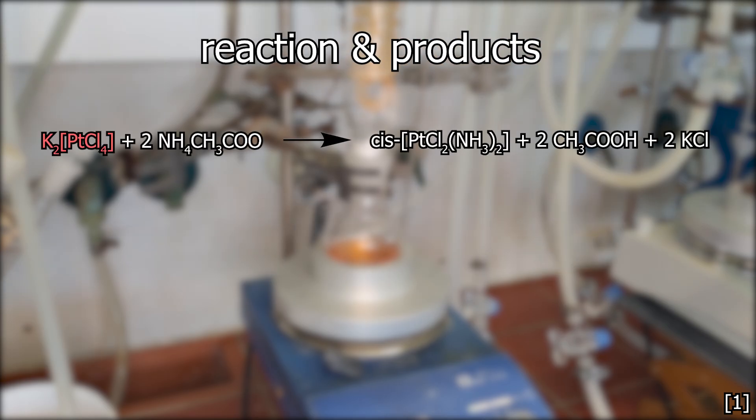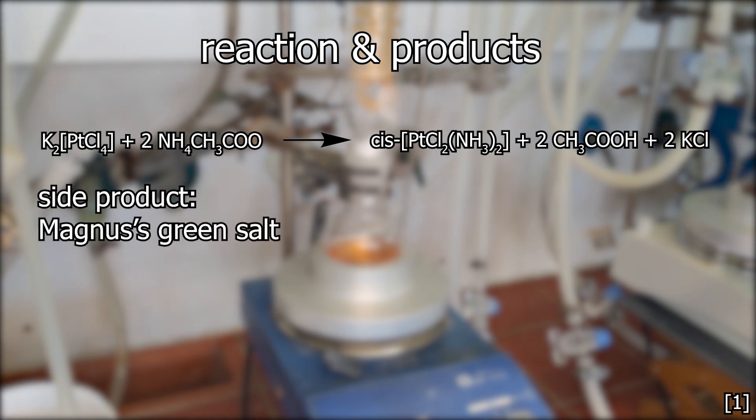Potassium tetrachloroplatinate reacts with ammonium acetate to produce cisplatin, acetic acid, and potassium chloride. During this synthesis, side products such as the green Magnus salt and metallic platinum are formed, which is why this product has a slight greenish tint.